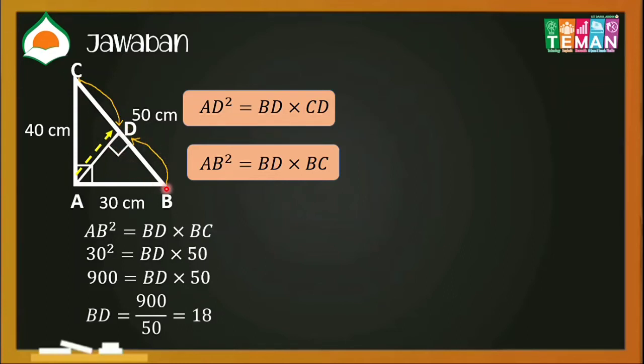Kita sudah tahu BD, sekarang kita mau mencari CD-nya. Nah, pakai rumusnya ini, teman-teman. CD sama dengan CB dikurang BD. Nah, CB-nya sudah tahu tadi 50, lalu BD-nya 18, maka CD-nya sama dengan 32 cm.